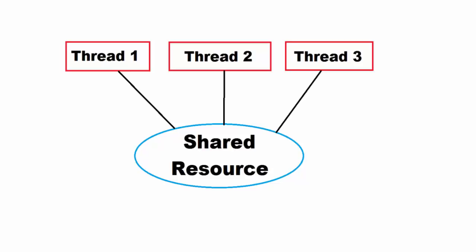So first of all, what is thread synchronization? Thread synchronization is defined as the mechanism which ensures that whenever two or more threads are executed in parallel or concurrently and they are sharing the same resource, all the threads should not work simultaneously on the same resource. Let me explain the thread synchronization problem with a diagram. You can see there are three threads and all these threads are sharing the same resource — it can be a global variable, for example.